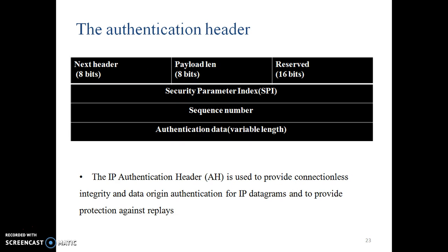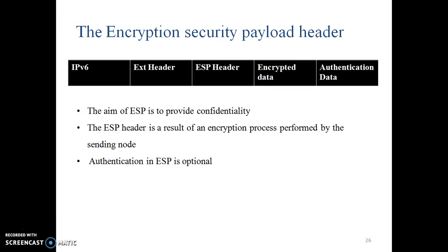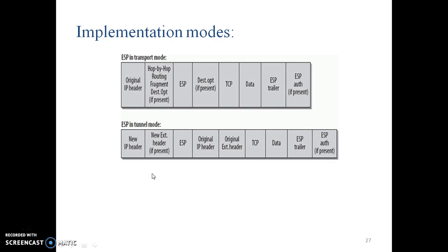ESP — Encapsulating Security Payload — is aimed at confidentiality. The ESP header is the result of an encryption process performed by the sending node. Authentication in ESP is optional. There are two implementation modes of ESP: ESP transport mode and ESP tunnel mode. We can see the differences between both of them.